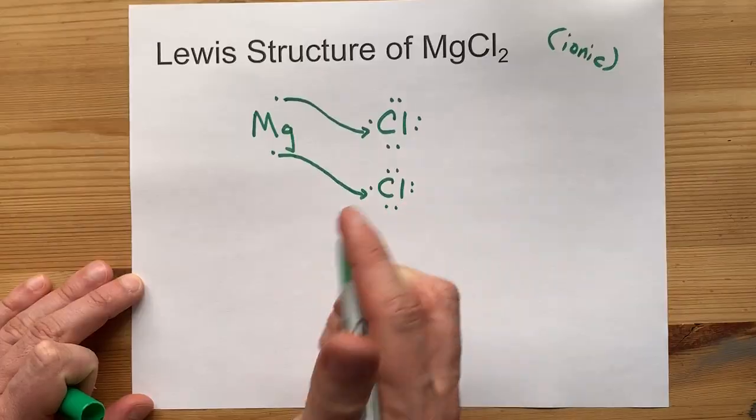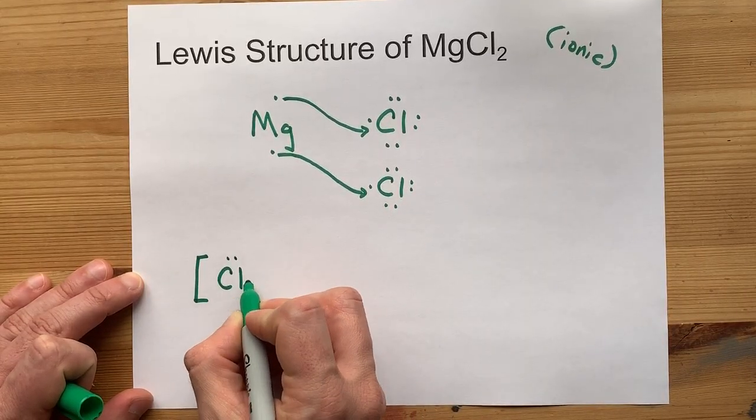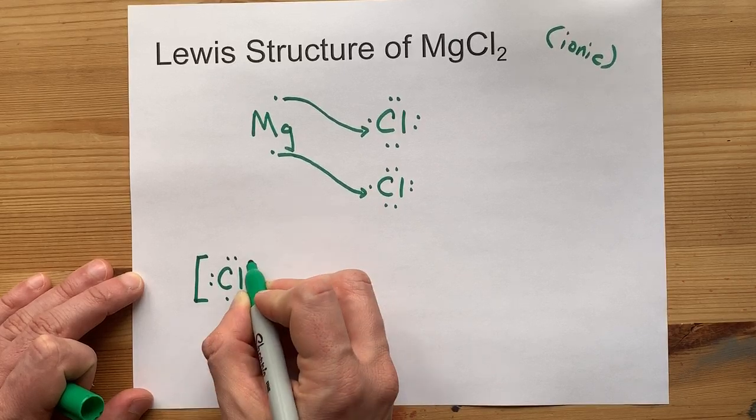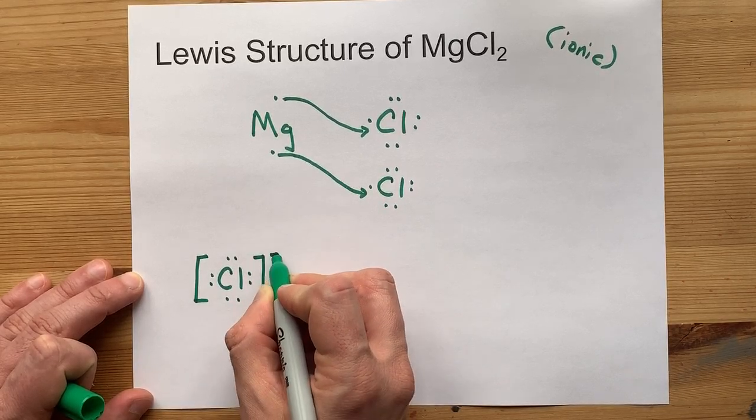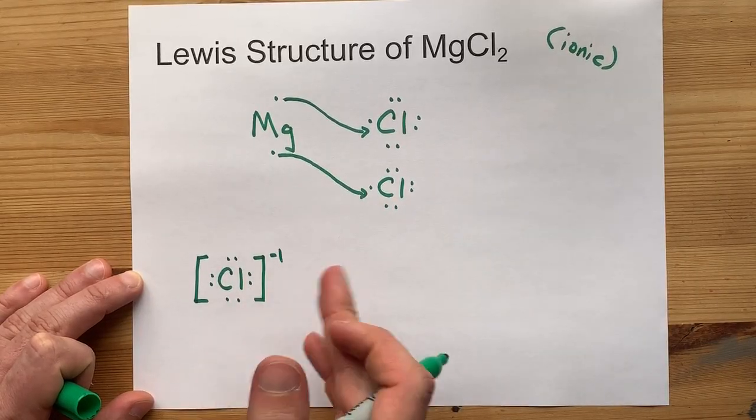Let's draw it to give ourselves the final Lewis structure. Cl now has a full 8 electrons in its outer shell. That's one more than it started with. So it gets a minus 1 charge.